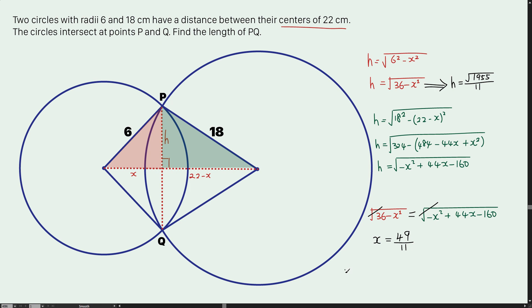And now, for the value of PQ is twice the value of h. And this is what I am going to get: 2 times square root of 1955 over 11. And it gives a value of approximately 8.04 cm.